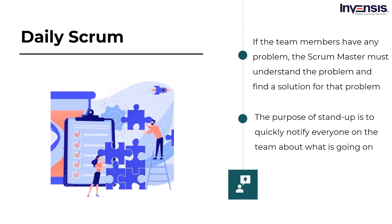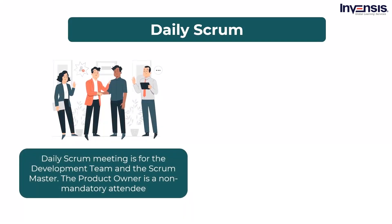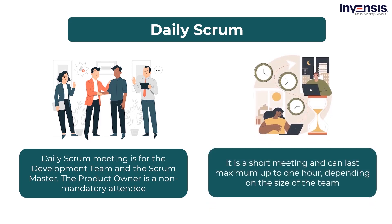There is implied accountability in disclosing the work you performed yesterday in front of your team. Nobody wants a team member who is always doing the same thing and not making any progress. This meeting is for the development team and the Scrum master. The product owner is a non-mandatory attendee; however, the product owner can join if they want to know how the team progresses. This is a short meeting and can last up to one hour, depending on the size of the team.